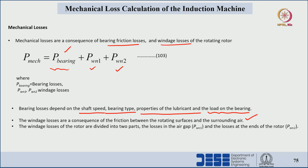These windage losses are divided into two parts: one part is the loss with respect to the air gap — the windage losses inside the machine — and the second is the windage loss at the ends of the rotor. At the ends of the rotor we see windage loss component two, and inside the air gap is part one of the windage loss.